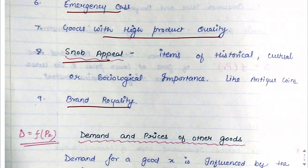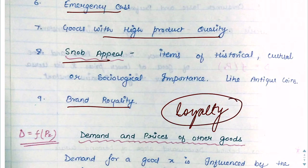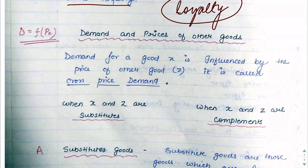Next is brand loyalty, similar to high product quality. If a consumer is very loyal to a brand and the price increases, they will still purchase it. So in this case also our law of demand fails.